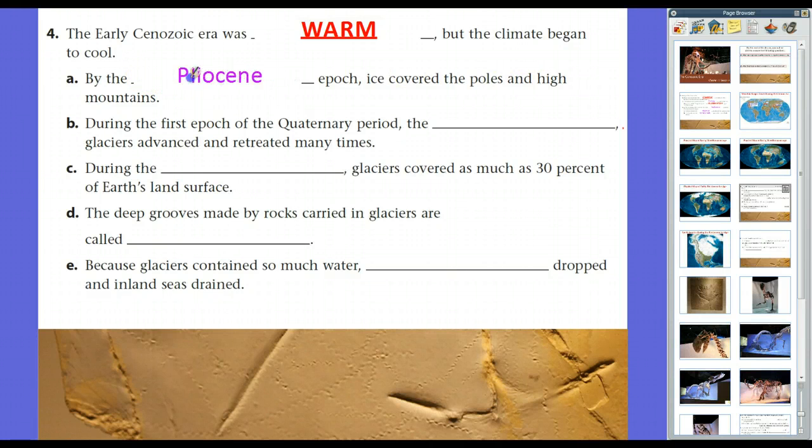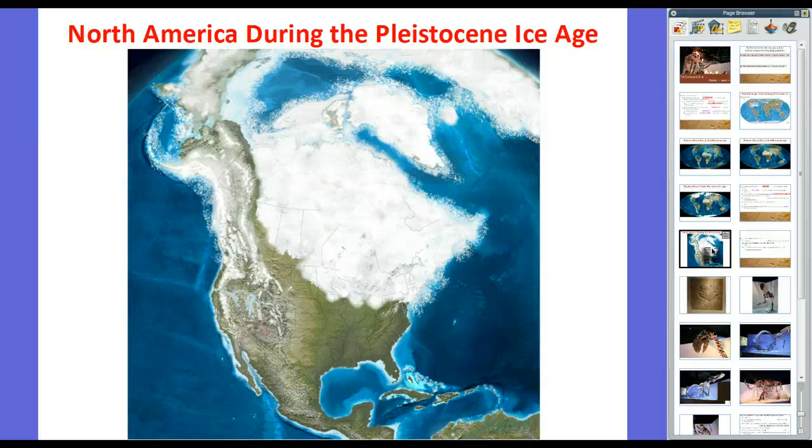Now, by the time the Pleistocene epoch, ice covered the poles and high mountains. And during the first epoch of the Quaternary Period, the Pleistocene epoch, glaciers advanced and retreated many times. In fact, this is what North America looked like during the Pleistocene Ice Age.